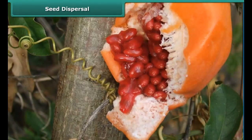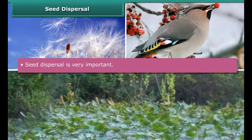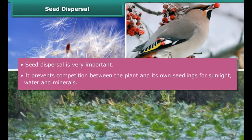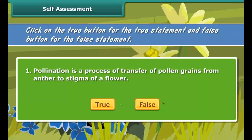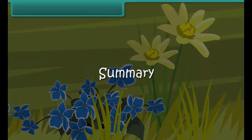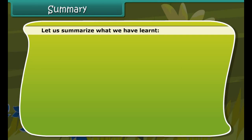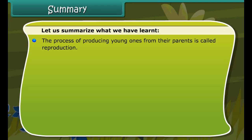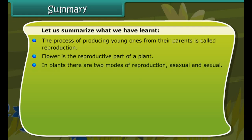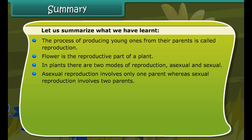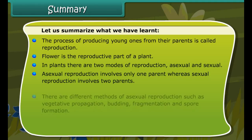Seed dispersal. Plants cannot move from one place to another. Have you ever thought about how the same kinds of plants grow at different places? This happens because seeds are dispersed to different places. Some get blown off with the wind to far-off places; some seeds are carried away by water; while some get dispersed by insects or animals. When seeds reach the soil, they germinate into a new plant. Some seeds are also dispersed when the fruit bursts with sudden jerks. Seed dispersal is very important because it prevents competition between the plant and its own seedlings for sunlight, water, and minerals. It also enables plants to explore new habitats.